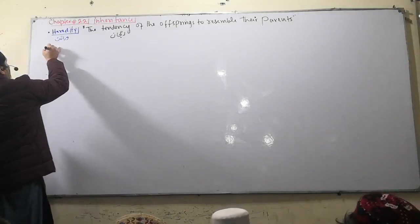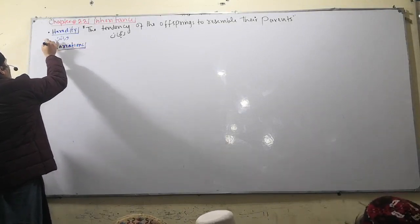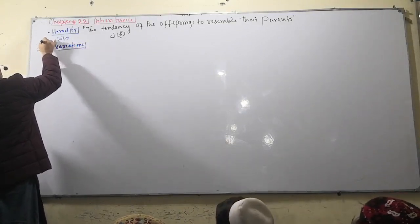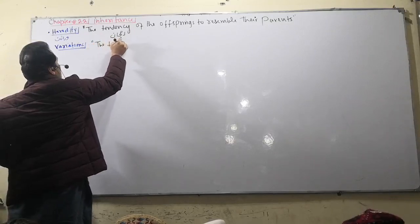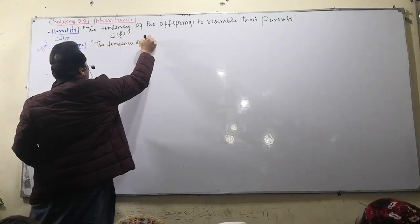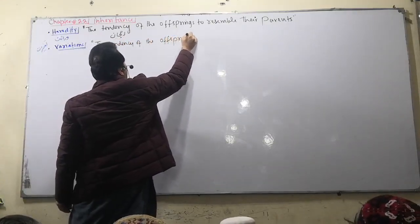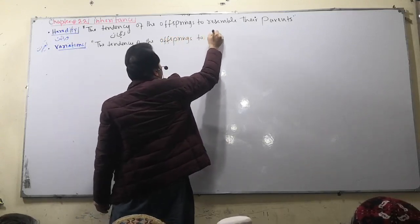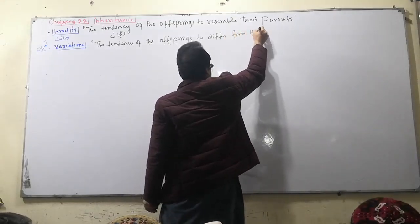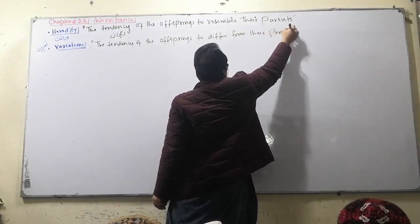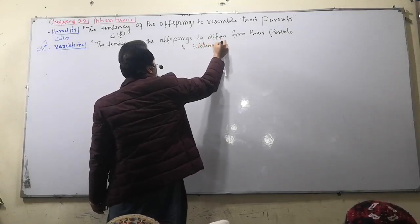Number two is variations. Variation is the tendency of the offspring to differ from their parents and siblings. Sibling meaning brother or sister.